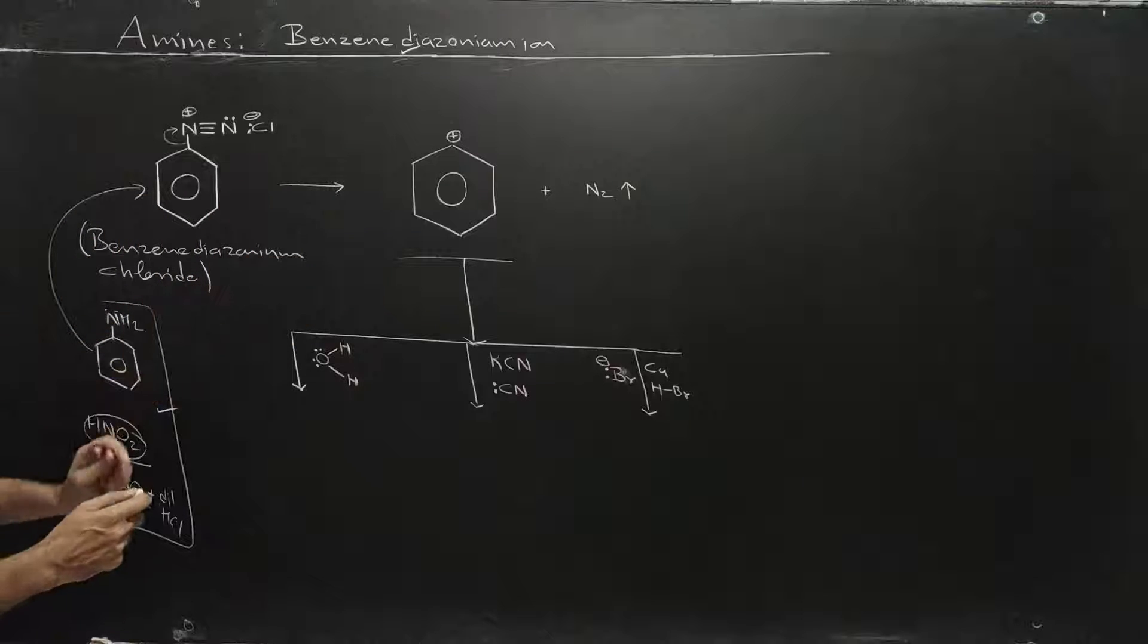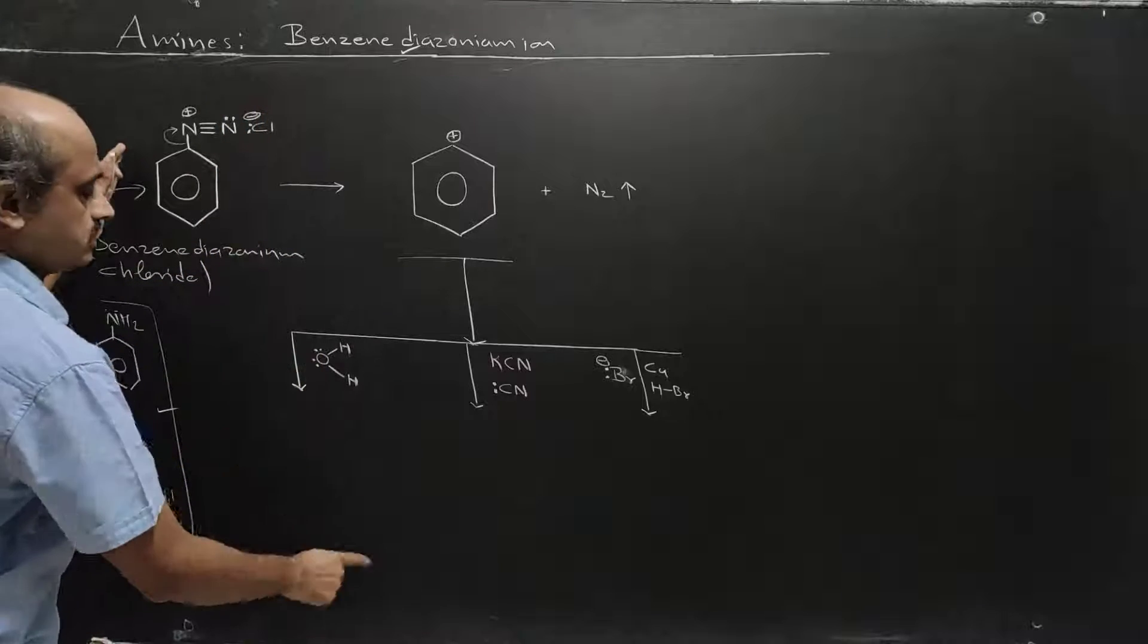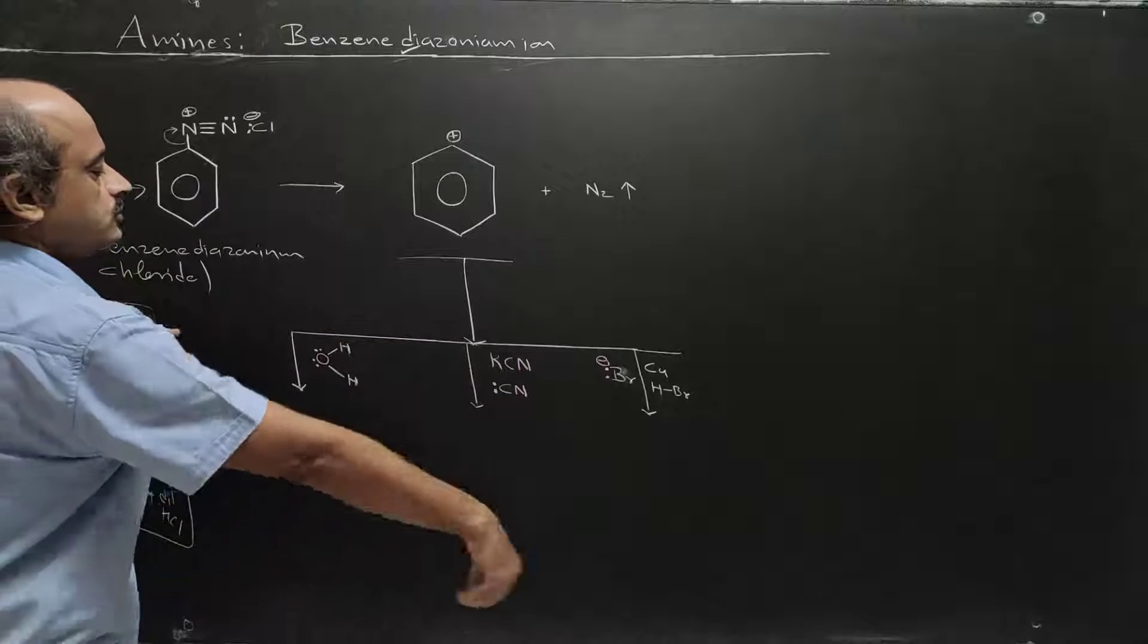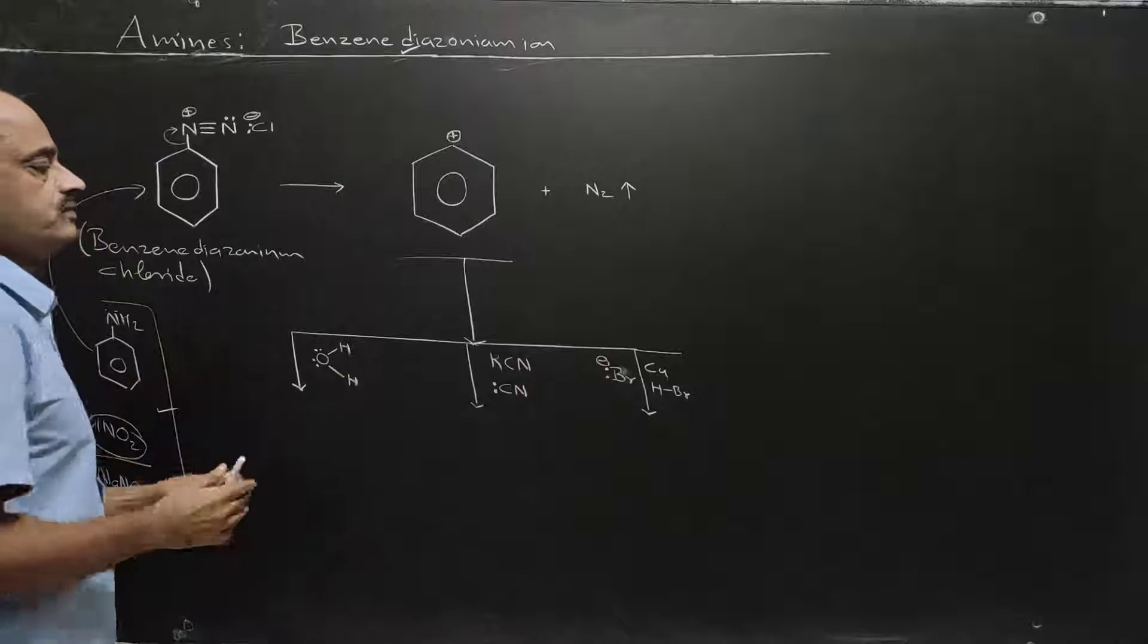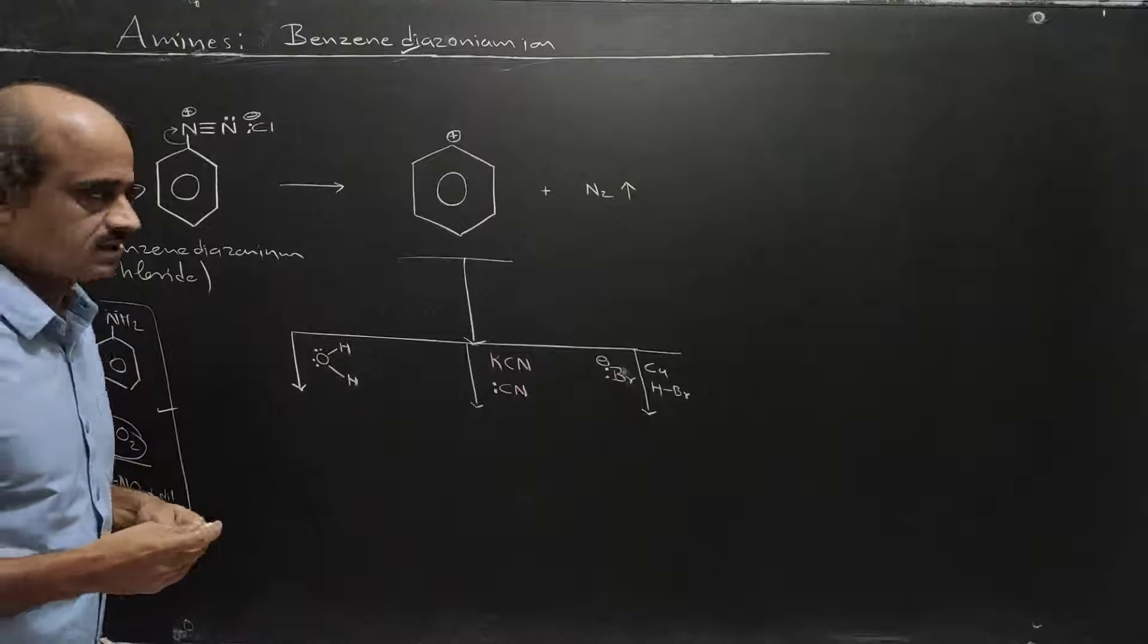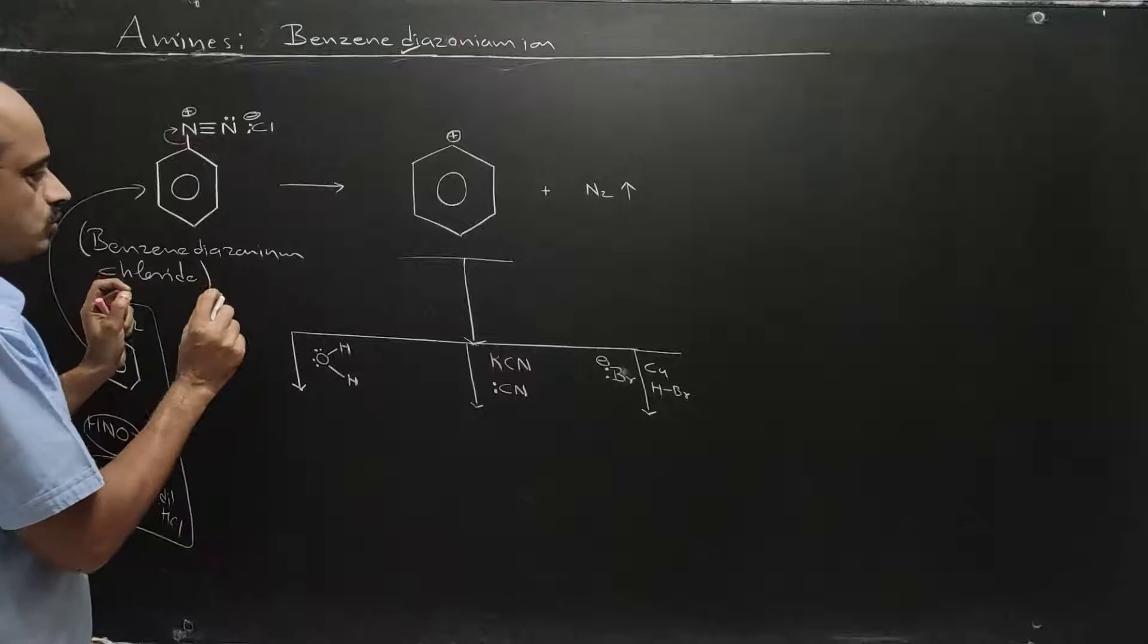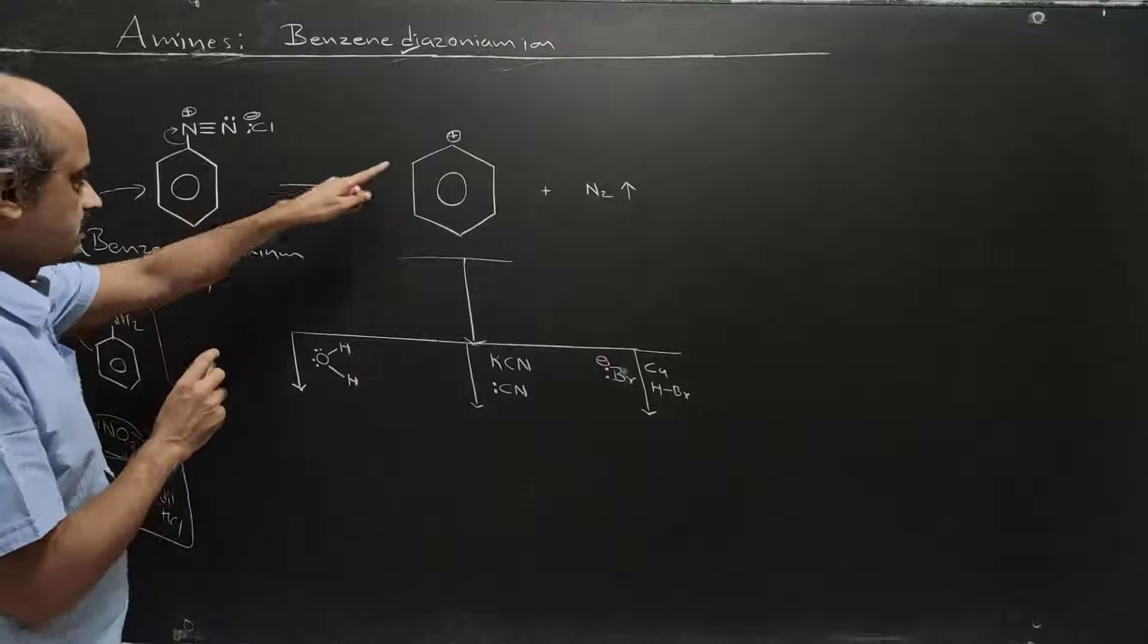So separately we have to first cover benzene diazonium chloride which is very useful. It can be converted into so many different compounds. The reactions include benzene diazonium chloride with water to form phenol, and with cyanide to form cyanobenzene.